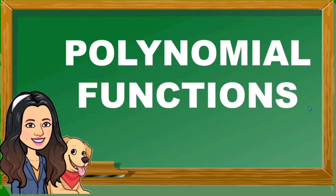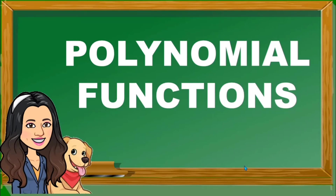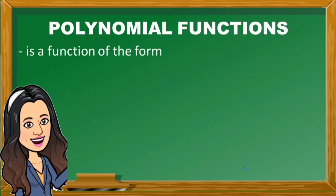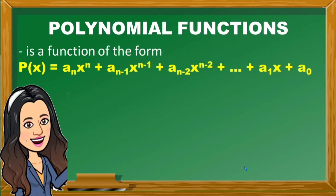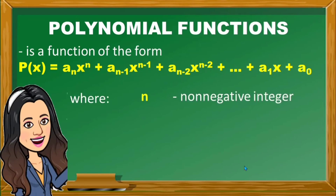Now let's go back to our discussion. What are polynomial functions? A polynomial function is a function of the form p of x is equal to a sub n x raised to n, plus a sub n minus 1 x raised to n minus 1, plus a sub n minus 2 x raised to n minus 2, plus dot dot dot plus a sub 1 x plus a sub 0. Where n is a non-negative integer — meaning it should only be positive or 0, but not a negative integer. n is also the power of x in every term of the given polynomial.